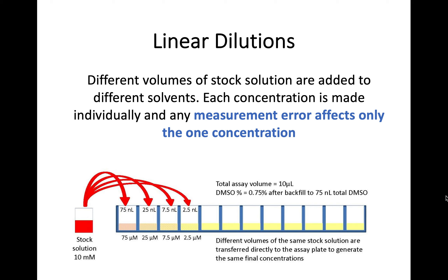Because you are making each linear dilution individually, if you do make some sort of measurement error in one of your dilutions it's only going to affect that one concentration — that one dilution you've created — because each of these are done individually. One mistake hopefully only happens once and it's just going to affect that one concentration.